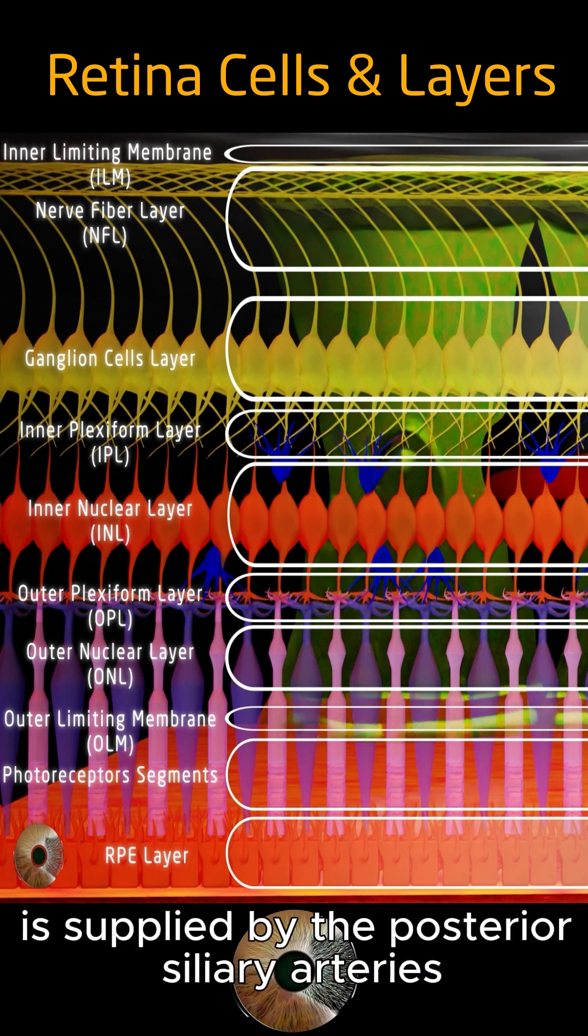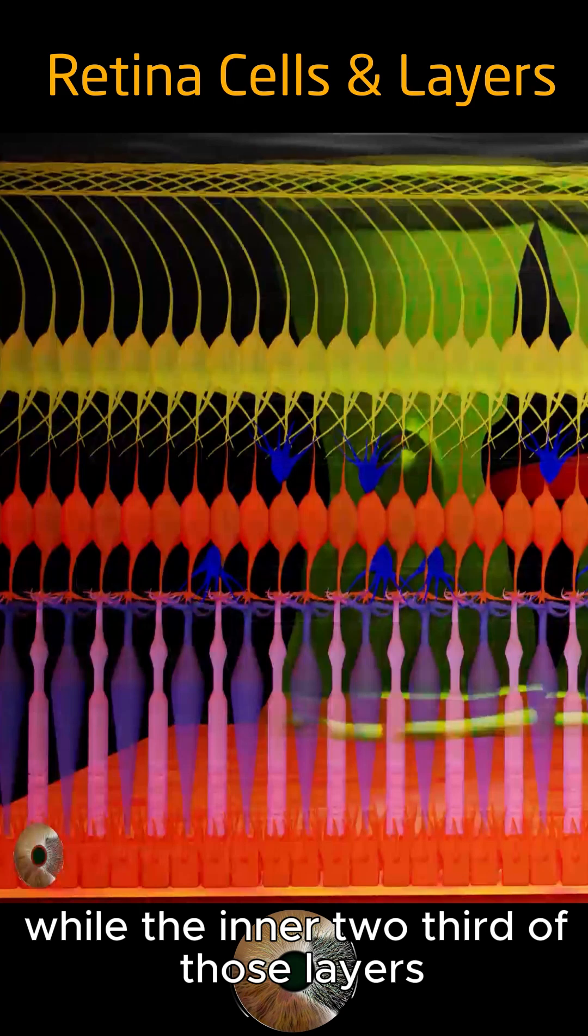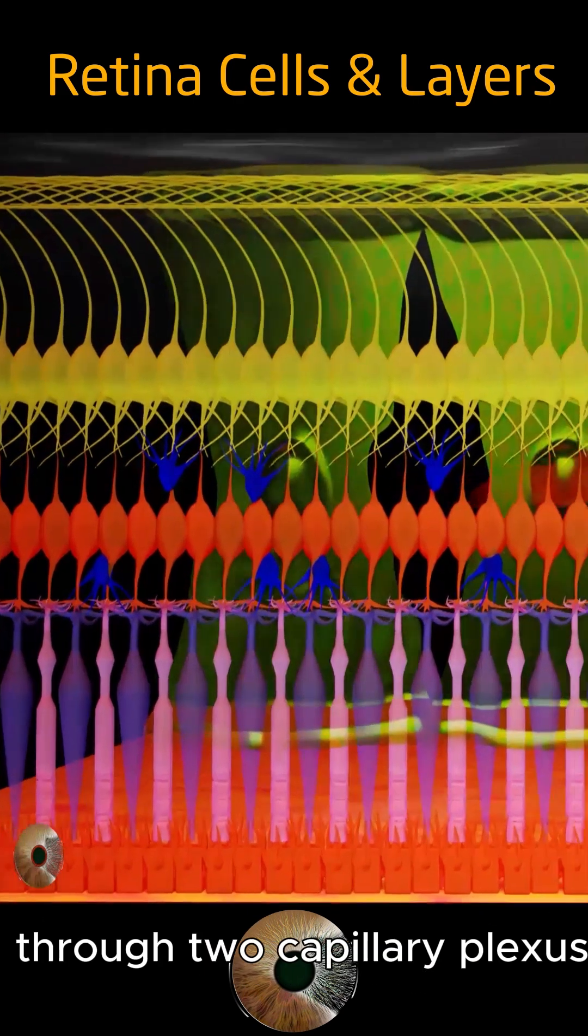The outer third of those layers is supplied by the posterior ciliary arteries through the distribution of nutrients from the choriocapillaris, while the inner two-thirds of those layers is supplied by the central retinal artery through two capillary plexuses.